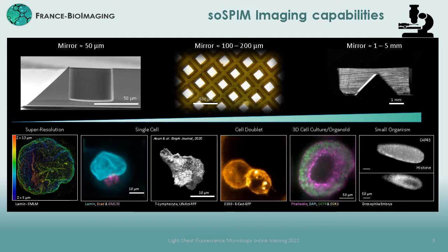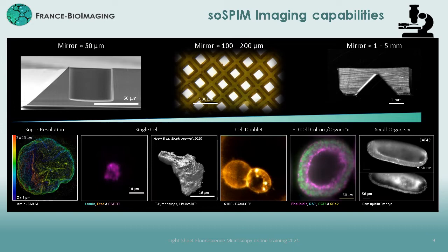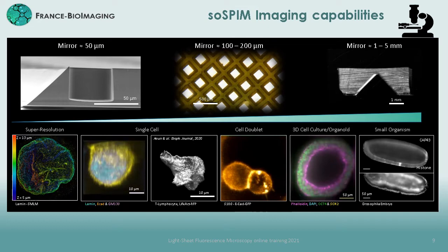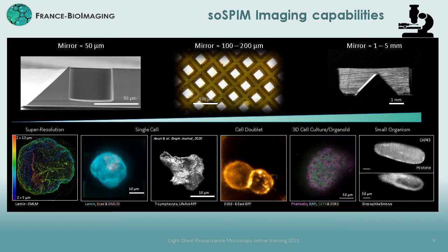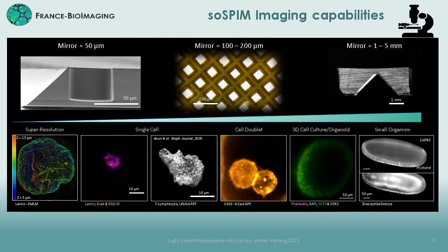Using bigger mirrors of 100 to 200 micrometers, such as the ones in our G-well devices, we are able to image at the spheroid and organoid scale of a few hundreds of micrometers. Finally, using millimeter-sized mirrors, we can image up to whole small organisms, such as the whole Drosophila embryo. We can emphasize that these samples have been imaged using different objectives with different magnifications, simply by turning the objective turret of the microscope body on which the SOSPIN system is placed.